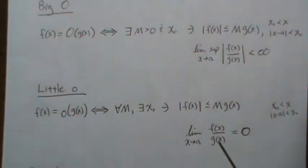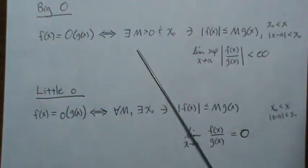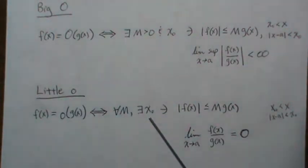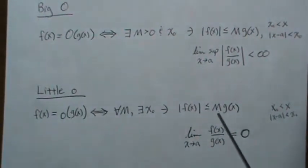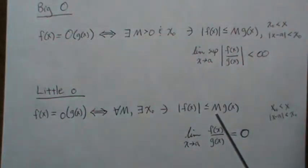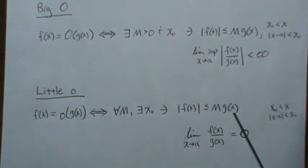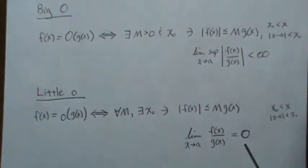For little o, this says: for every m, there exists an x₀ such that this relationship holds. So m can be anything, no matter how small — really, really small, close to zero — but you let x get big enough or close enough to the value a, then g(x) really gets big compared to f(x) and makes this ratio go to zero.